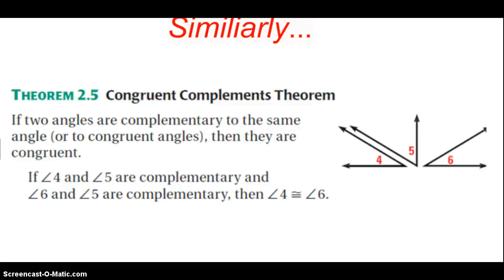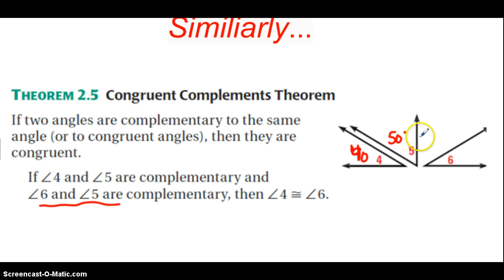In this example, angle 4 and angle 5 are complementary, and angle 6 and angle 5 are complementary. To see why, put some angle measures in: if angle 4 is 40 degrees and angles 4 and 5 are complements, then angle 5 is 50 degrees. And if angles 6 and 5 are complements and angle 5 is 50 degrees, then angle 6 has to be 40 degrees. Therefore, angles 4 and 6 are congruent to each other.